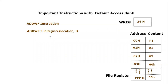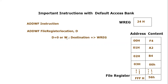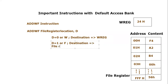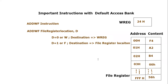So what are the cases for the d bit? If d is equal to zero, or one can simply write W, then the destination would be the W register or working register. This is the first case — either we write d equal to zero or d equal to W; in both scenarios the destination is the working register. The next scenario is either d equal to one, or one can also use simply F to indicate that the destination is equal to the file register location.